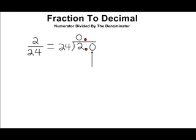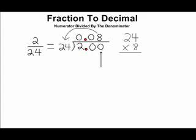And 24 cannot be divided into 20 so we must put a 0 in the tens place. Now because 24 cannot be divided into 20 we just add another 0 and then we pretend that's 200 even though it's really 2.00. 24 can be divided into 200 a total of 8 times. And the product of 8 and 24 is 192. So now let's subtract that product of 192 from 200 and we come up with a difference of 8.